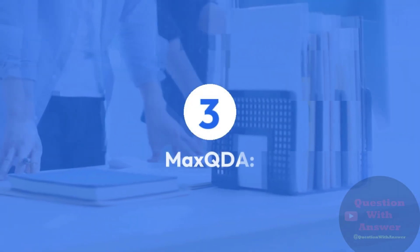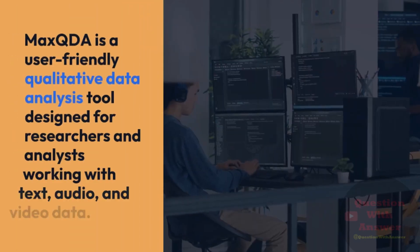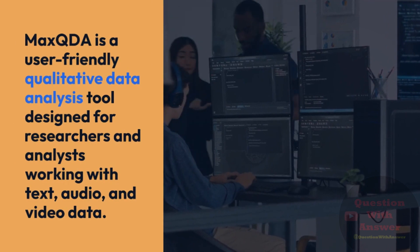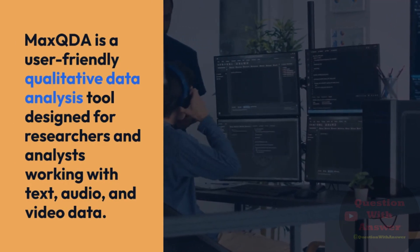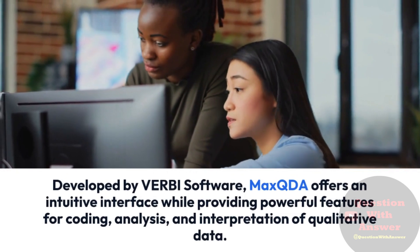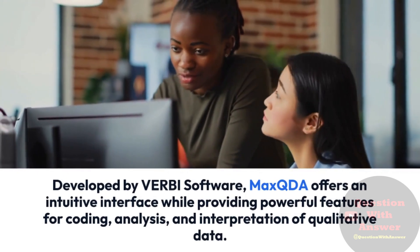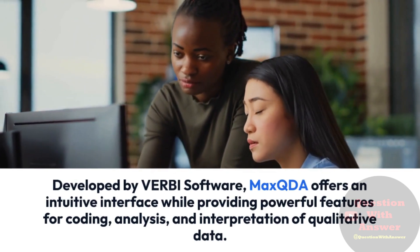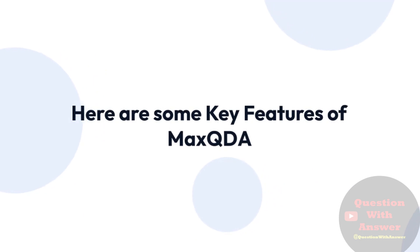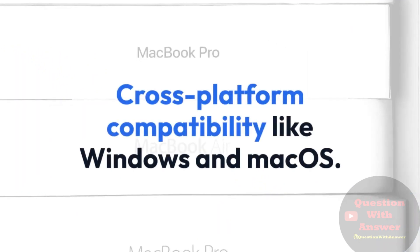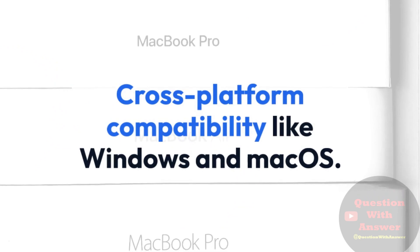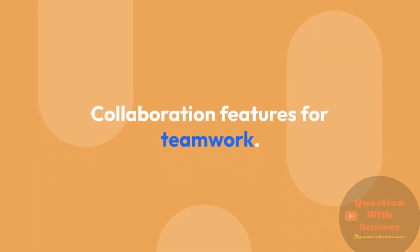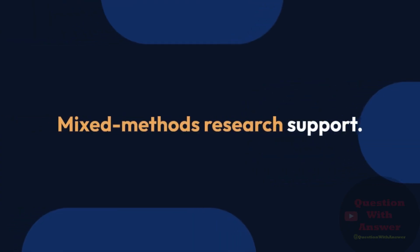3. MaxQDA. MaxQDA is a user-friendly qualitative data analysis tool designed for researchers and analysts working with text, audio, and video data. Developed by Verbi Software, MaxQDA offers an intuitive interface while providing powerful features for coding, analysis, and interpretation of qualitative data. Key features include: cross-platform compatibility for Windows and macOS, support for a wide range of data formats, collaboration features for teamwork, and mixed methods research support.